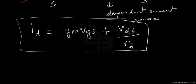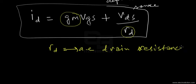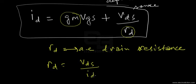R_D is referred to as the AC drain resistance of the FET — the resistance in the channel of the FET when working with AC signals. R_D is equal to V_DS divided by the drain current ID, and this is taken when the input signal V_GS equals zero. So whenever there's no signal at the input, the current flowing through the channel is a function of the output voltage.